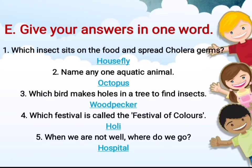Question E: give your answers in one word. First part: which insect sits on the food and spreads cholera germs? The answer to this question is housefly. Housefly is an insect which sits on the food and spreads cholera germs. The spelling is H-O-U-S-E-F-L-Y, housefly.